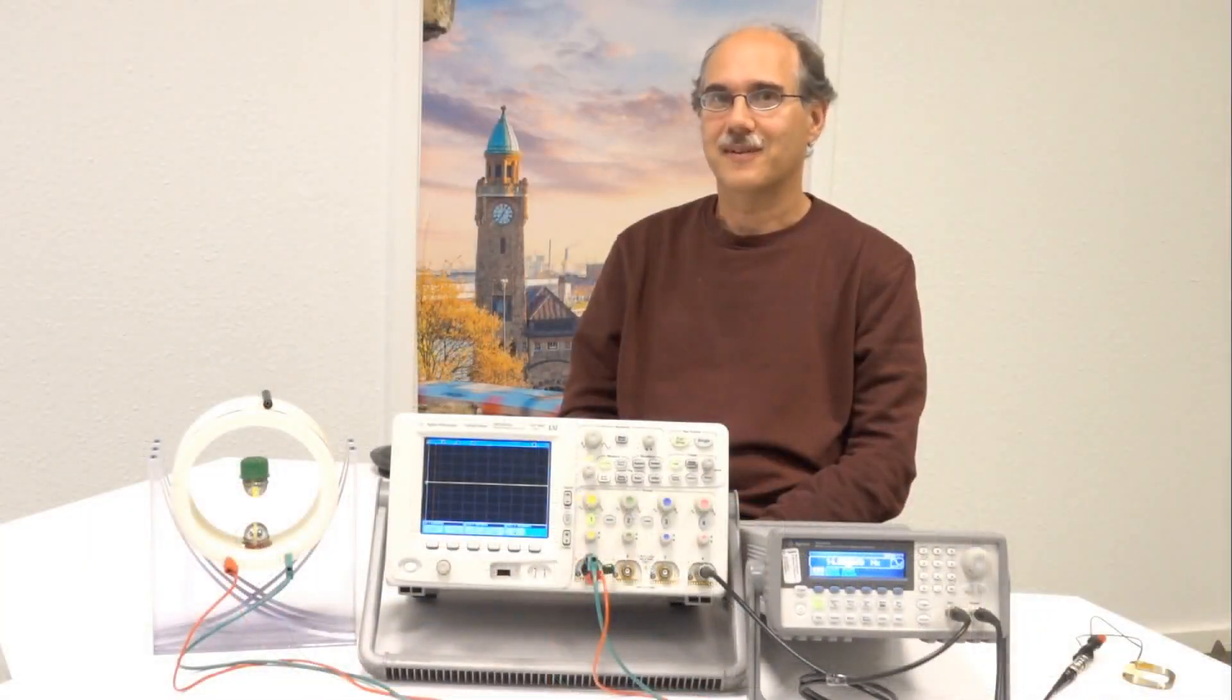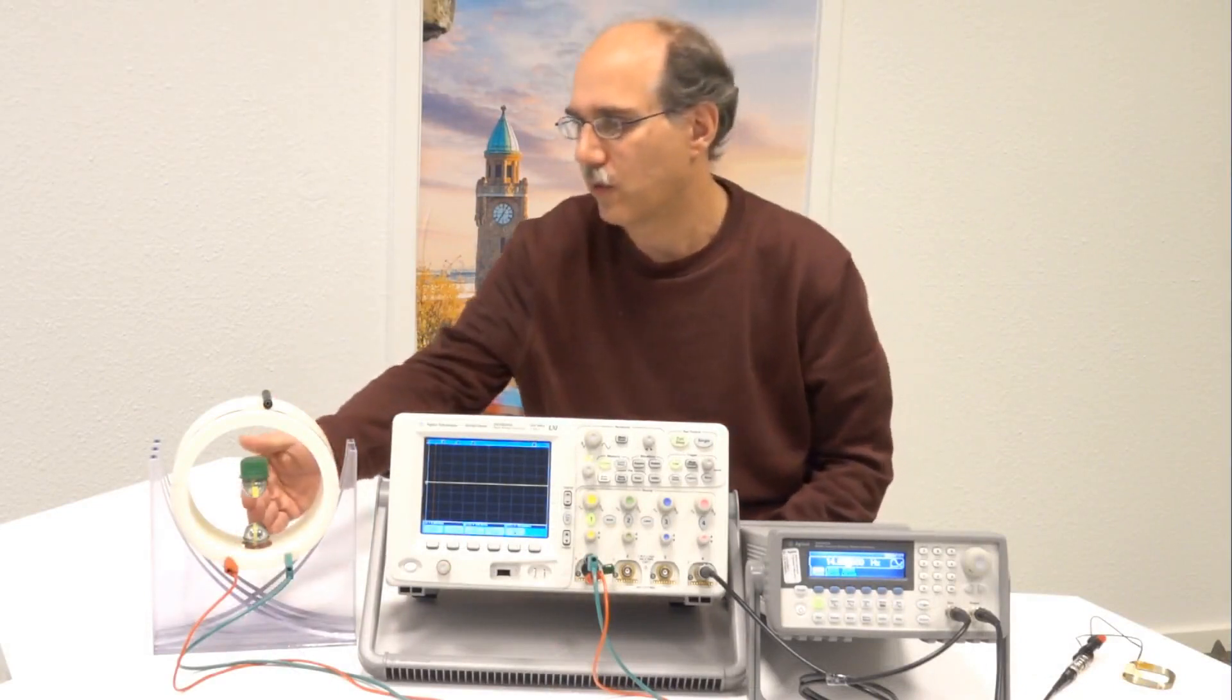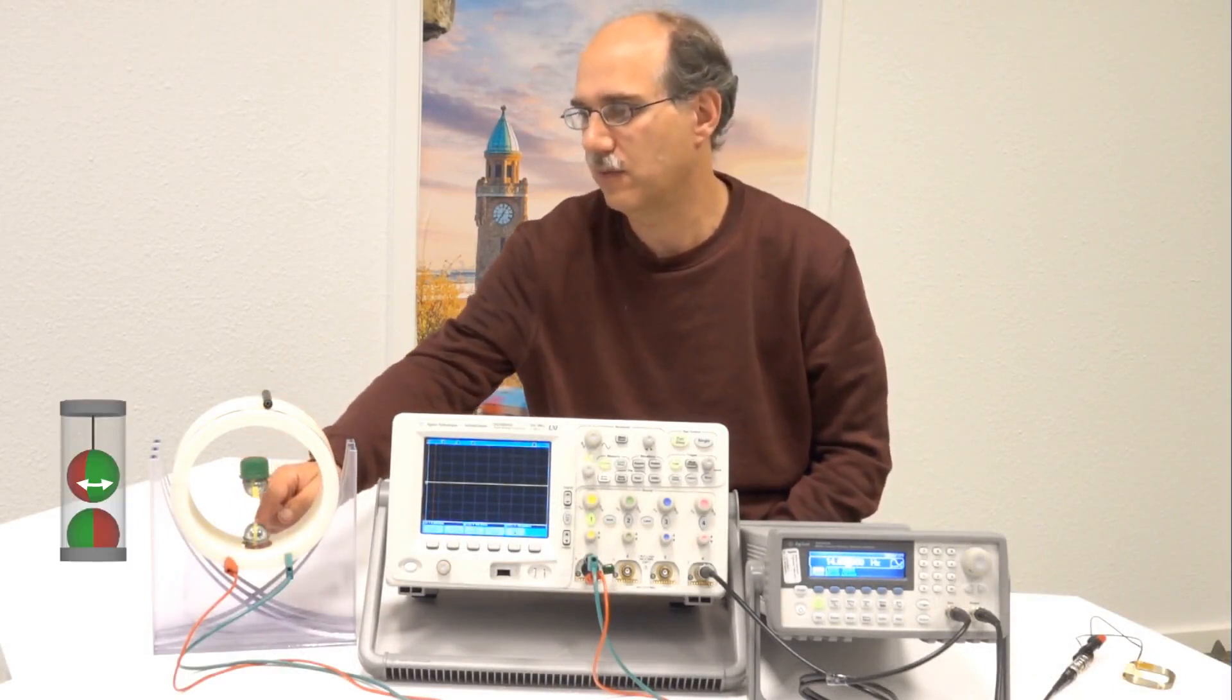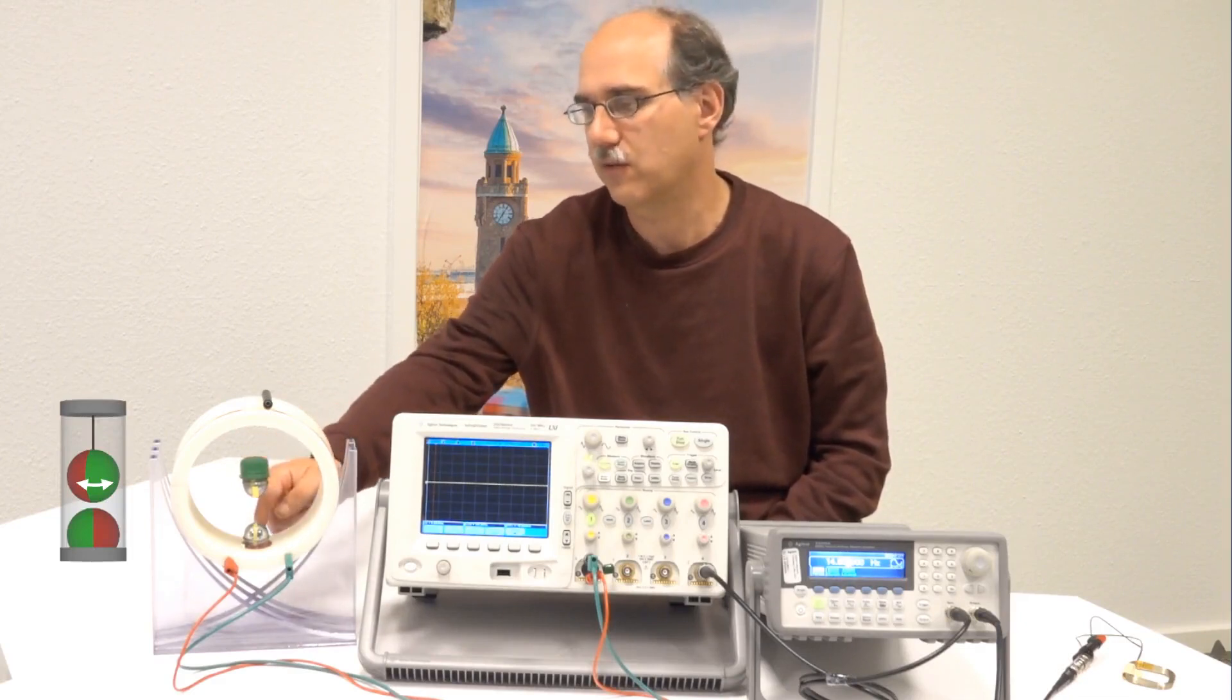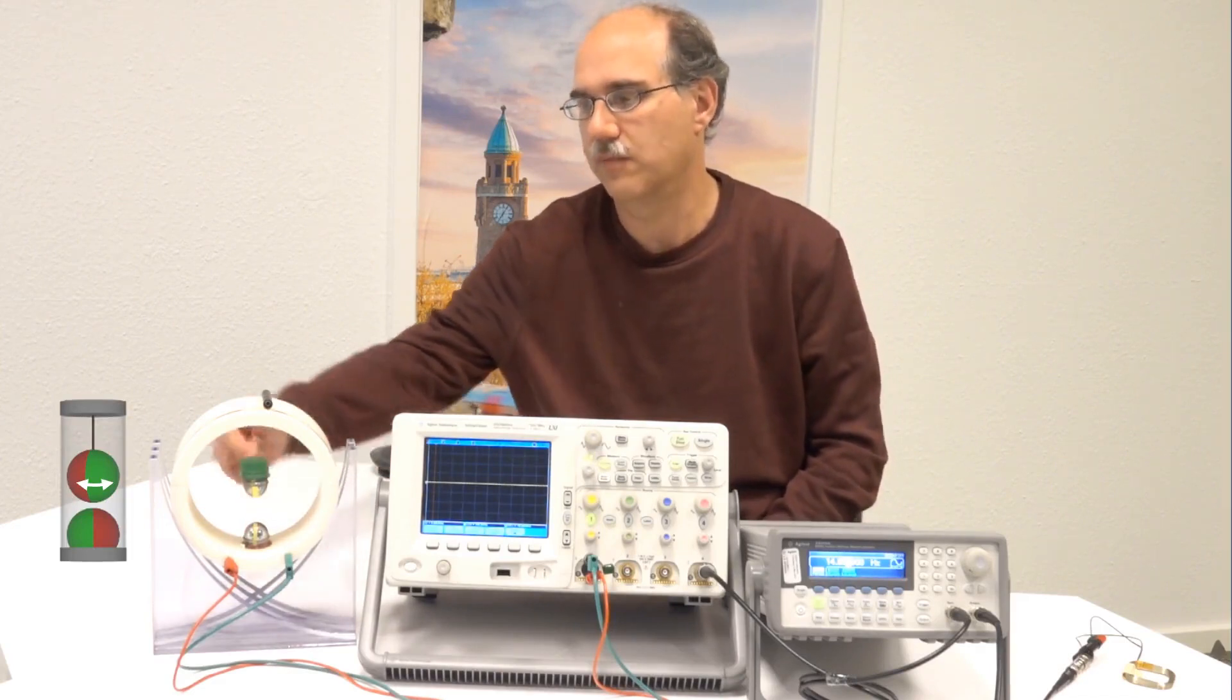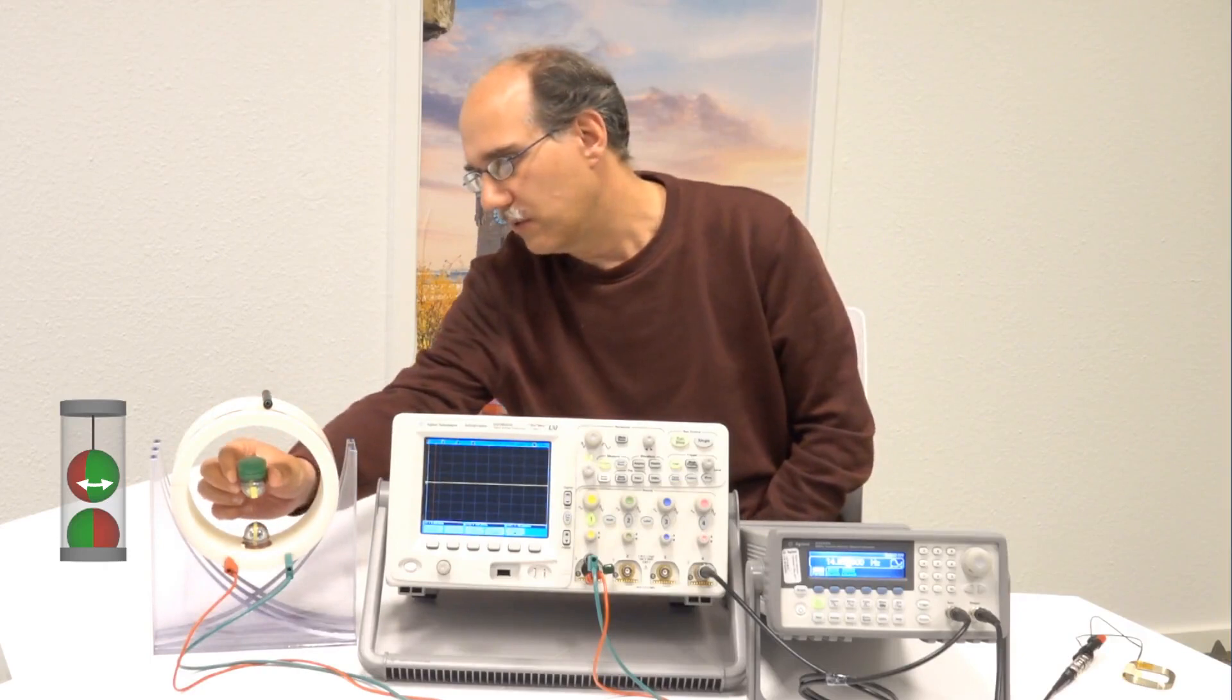Now the fun part, a demonstration experiment. But first, let's describe the experimental setup. Here we have the model of the magneto-mechanical resonator. It consists of a fixed sphere and the suspended sphere. This fixed sphere is magnetized in that direction, the suspended sphere is magnetized in that direction, and the filament is hardly visible, it's very thin.